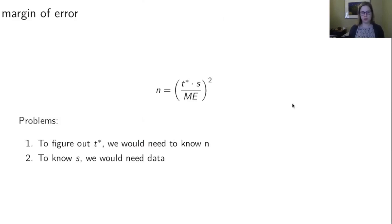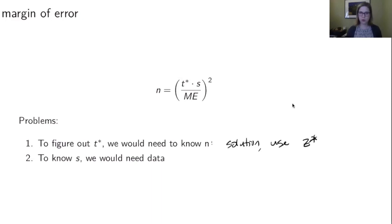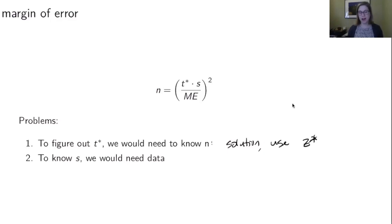We have two problems with this formula. First, to find our t* value we'd need to know n to compute degrees of freedom. The solution is to use z* instead — for 95% confidence we'd use 1.96, for 90% we'd use 1.645, et cetera. Z* doesn't depend on the degrees of freedom. The second problem is that to know s we need data — we don't know the standard deviation until we actually have it.